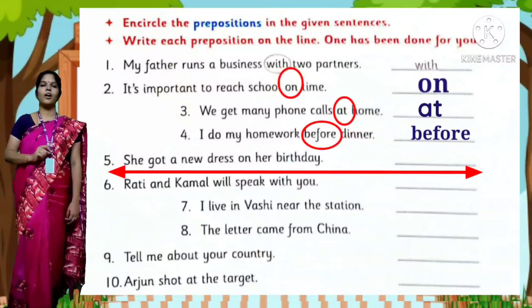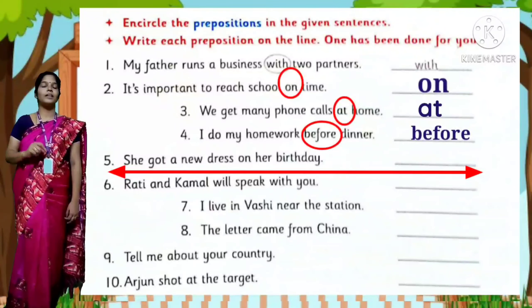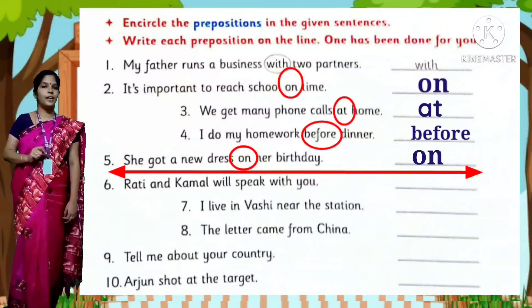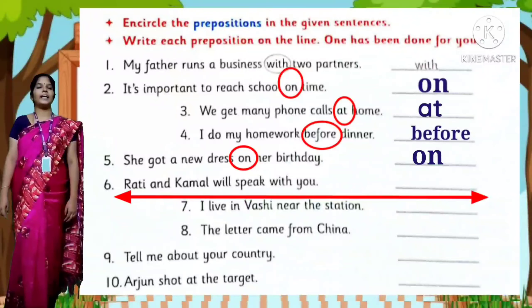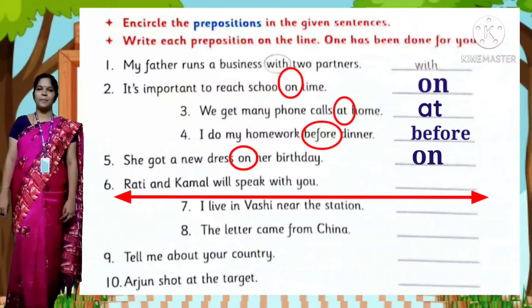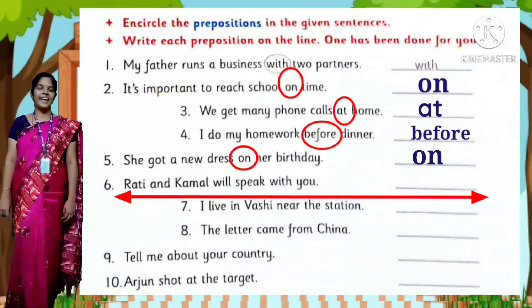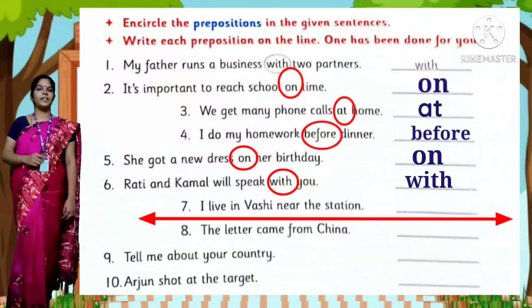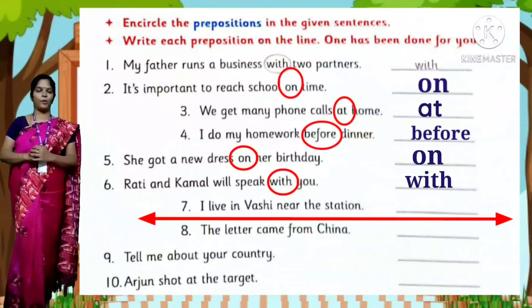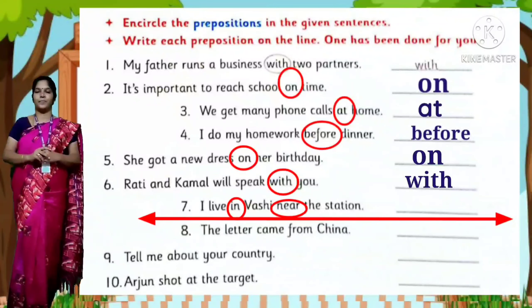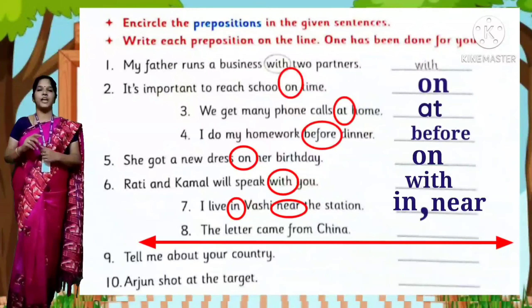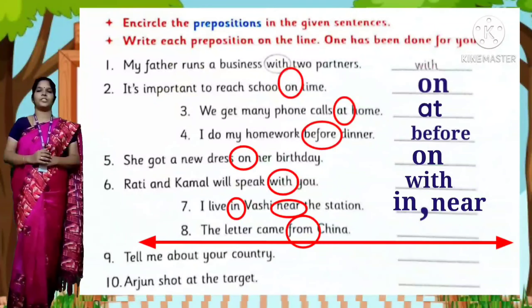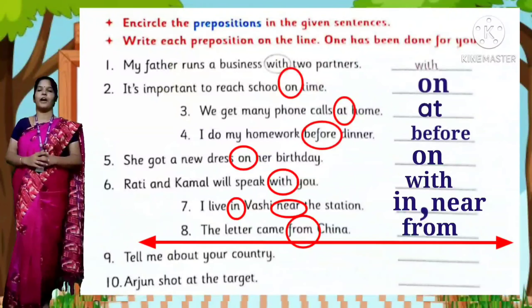She got a new dress on her birthday — circle 'on'. Rati and Kamal will speak with you — circle 'with'. I live in Vashi near the station — circle 'near'. The letter came from China — circle 'from'.